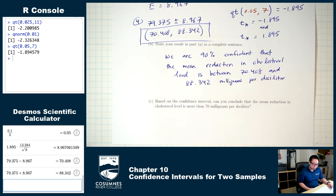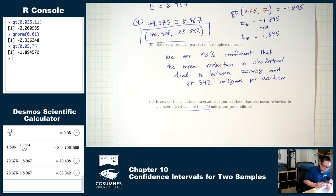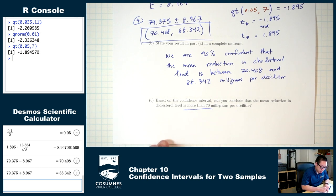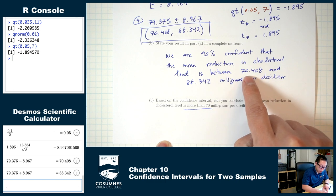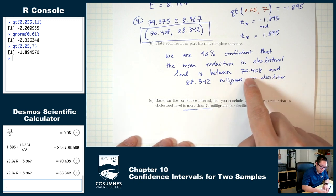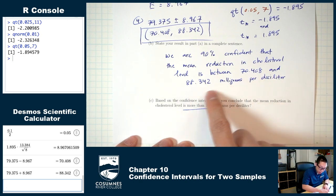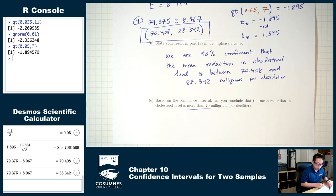Part C: based on the confidence interval, can you conclude that the mean reduction in cholesterol level is more than 70? We know the difference is somewhere between 70.408 and 88.342. Is that more than 70? Yes — 70.408 is more than 70, 88.342 is more than 70, so all numbers in between are more than 70 for sure. The answer is yes.